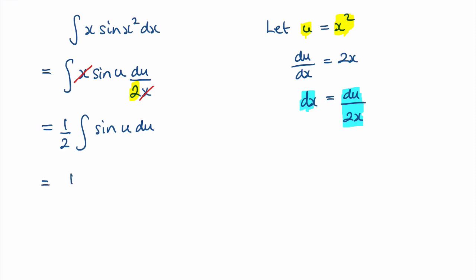We've got the half. The integral of sine u is negative cos. So we've got negative a half cos u. And now we substitute back in for u. And we know that u is x squared. So what we have is negative a half cos of x squared plus c.